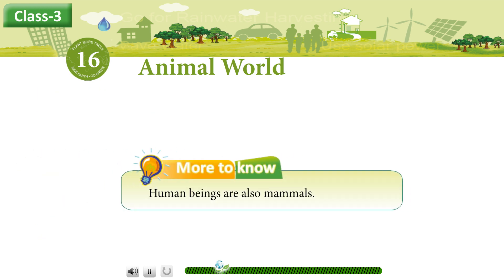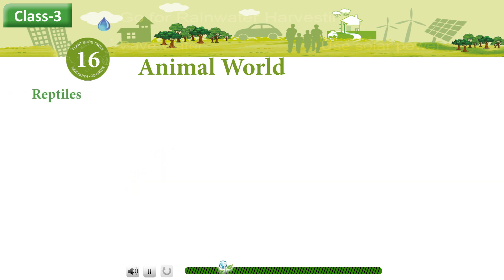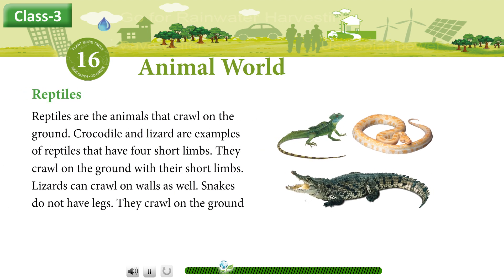More to know: human beings are also mammals. Reptiles. Reptiles are the animals that crawl on the ground. Crocodile and lizard are examples of reptiles that have four short limbs. They crawl on the ground with their short limbs. Lizards can crawl on walls as well.